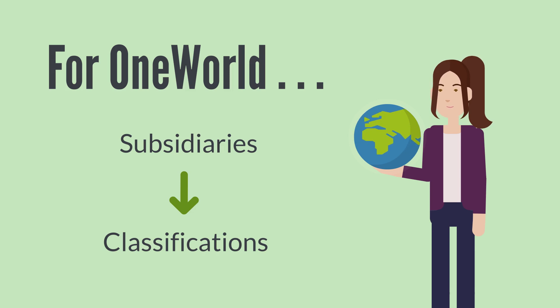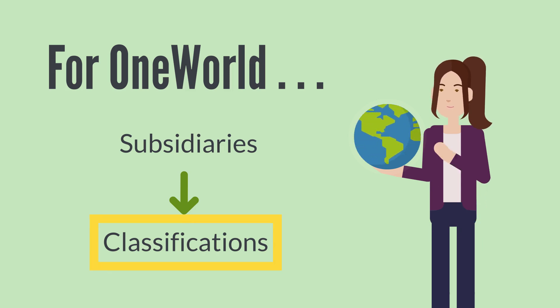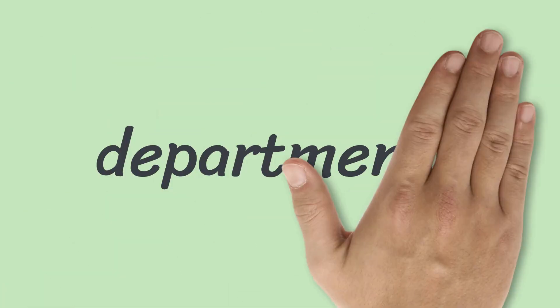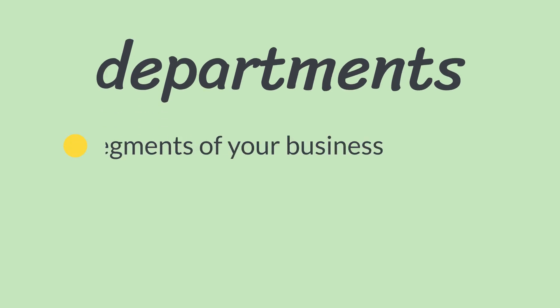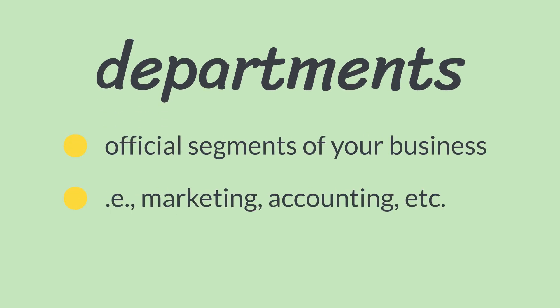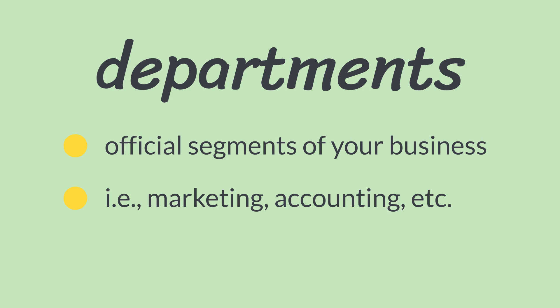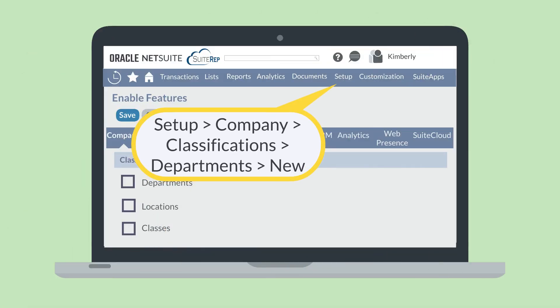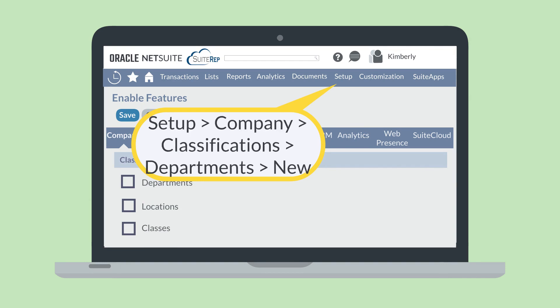Let's take a closer look at each of the three types of classifications. First, there are departments. As the name suggests, departments are the official segments of your business, such as the marketing department or the accounting department. Creating a new department is simple — navigate to Setup, Company, Classifications, Departments, New.